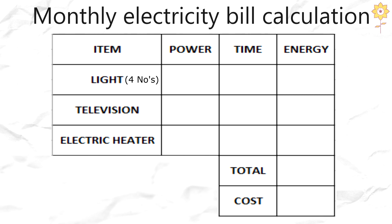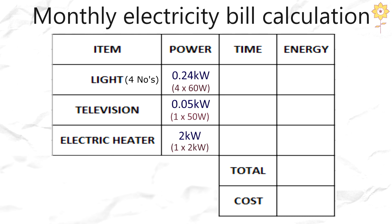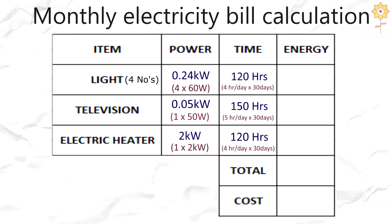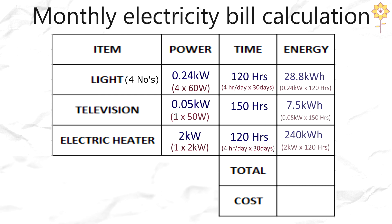To figure out monthly electricity usage, first make a table of all electrical items in the building and record their power ratings — making sure each is in kilowatts. Then record how many hours per month each item will be switched on. Use the formula energy equals power multiplied by time for each device, then add up all the values in the energy column to get your total monthly kilowatt hour usage.